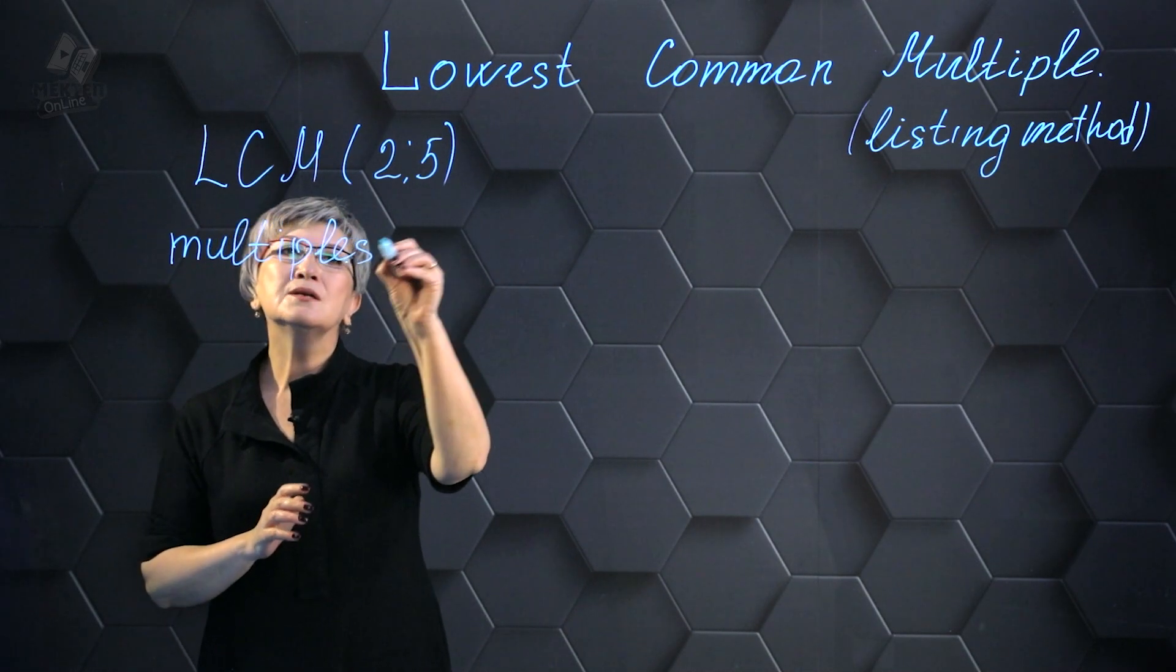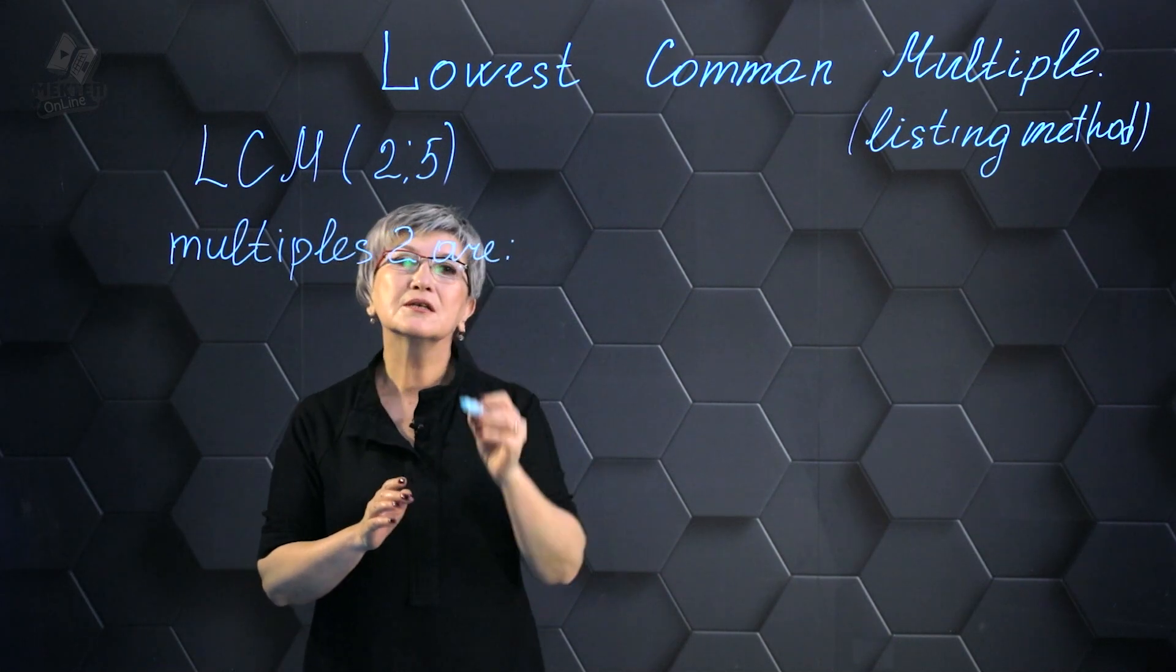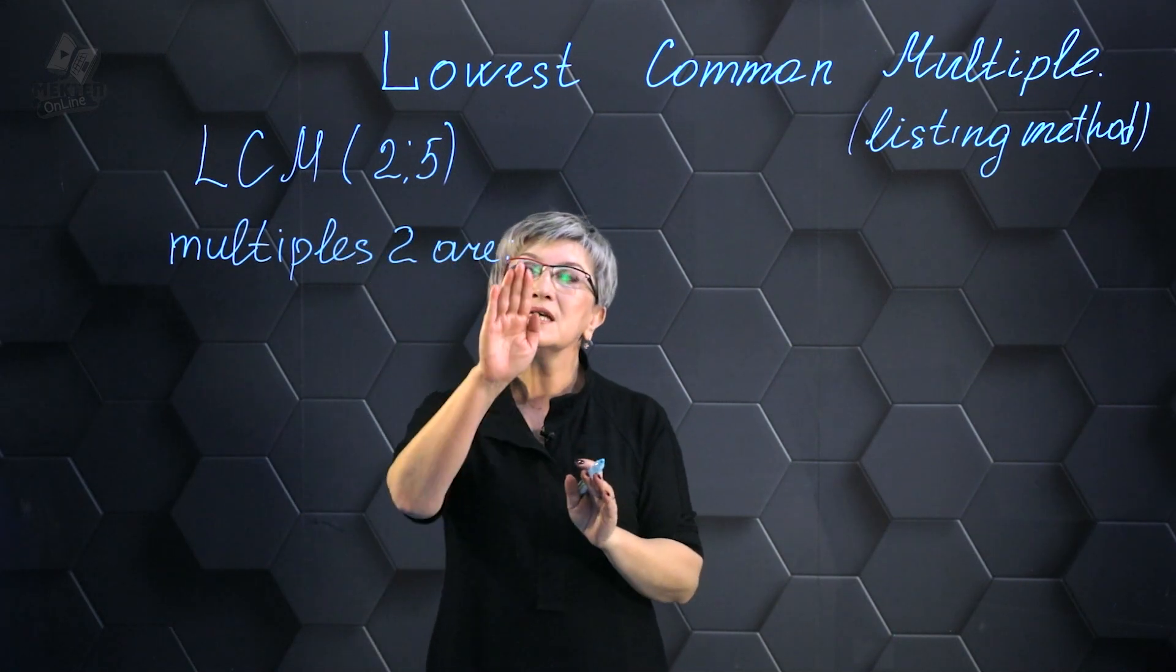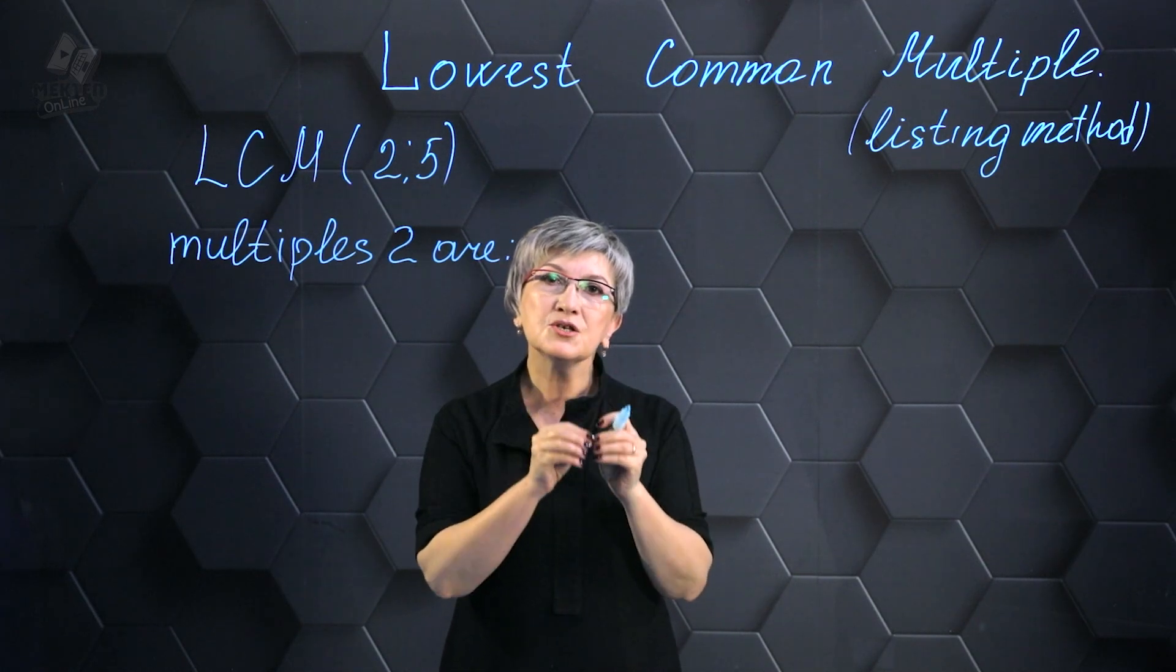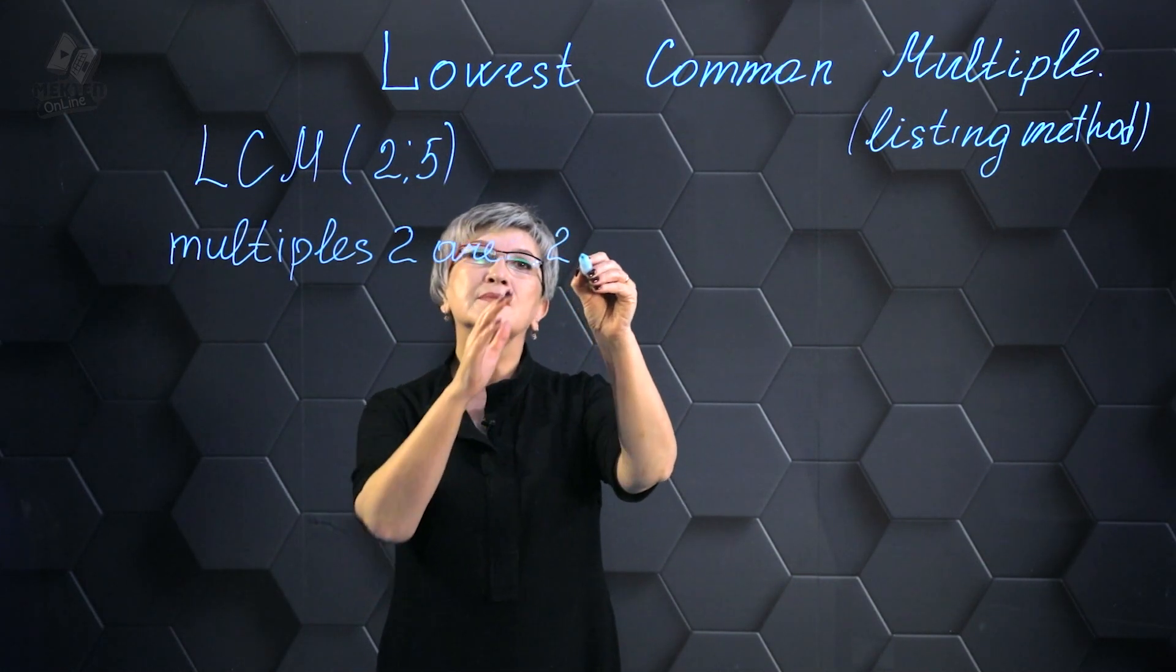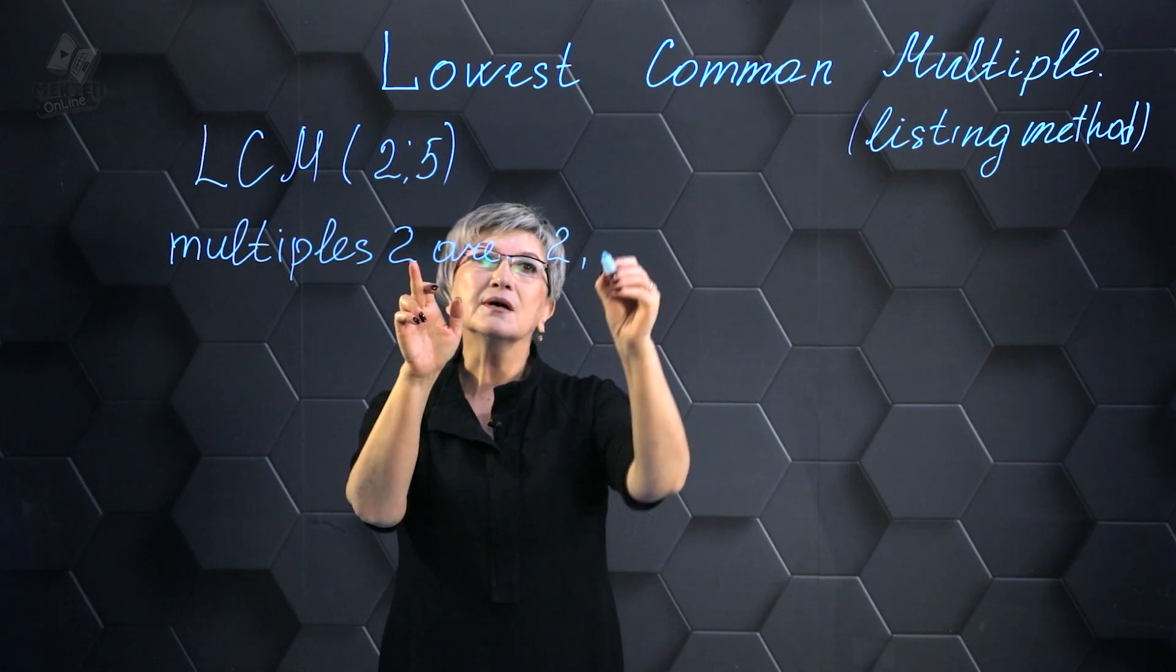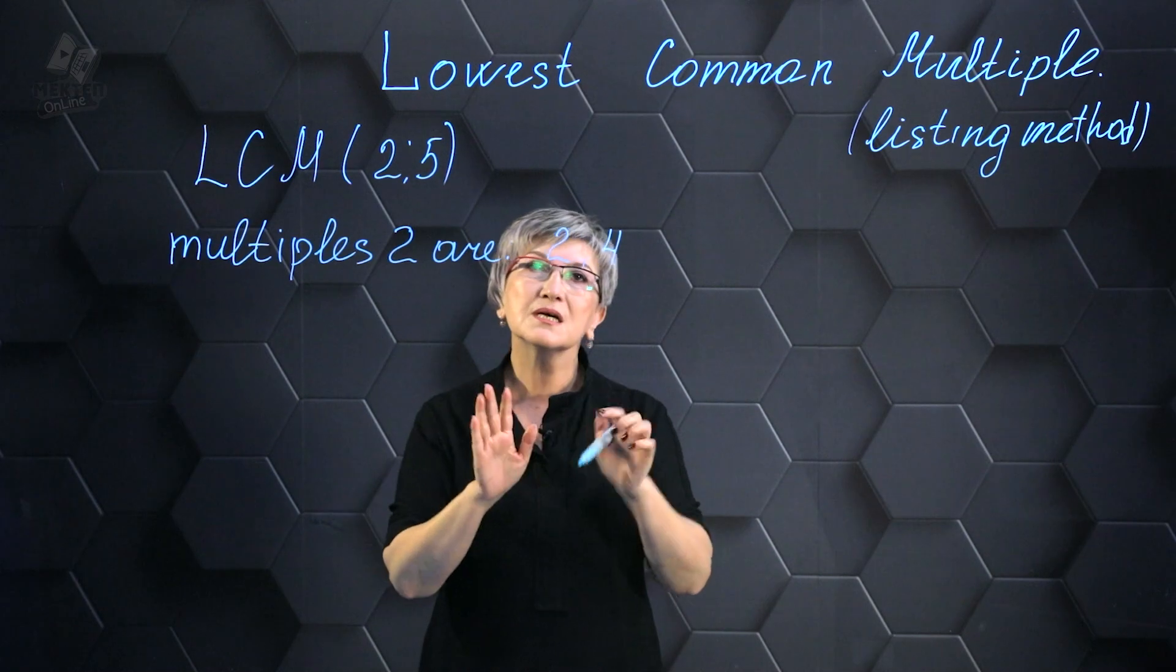The multiples of 2 are the numbers that are divisible by 2. We initiate with the smallest multiple—that's the number 2. Two divides by 2, but besides 2, the number 4 is also divisible. Four divides evenly by 2.